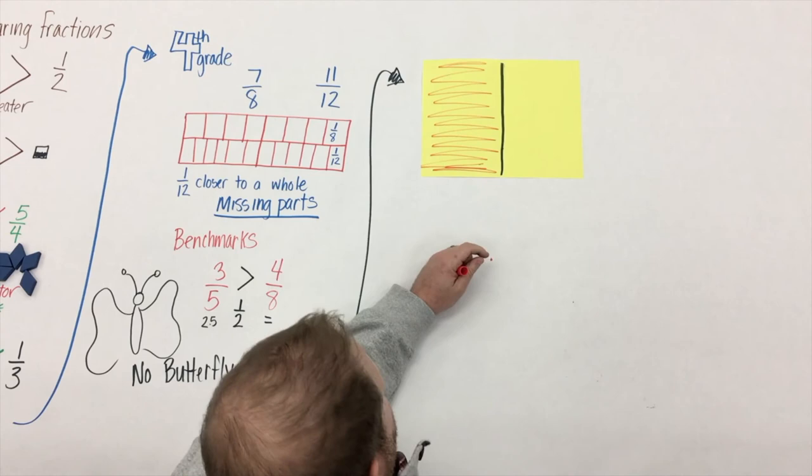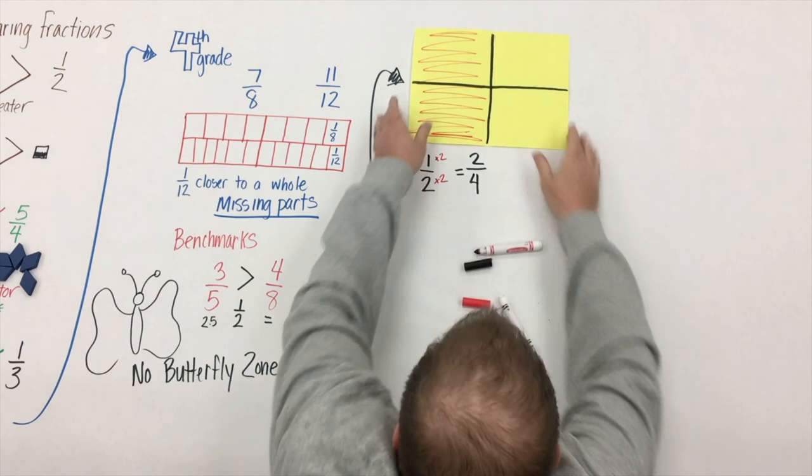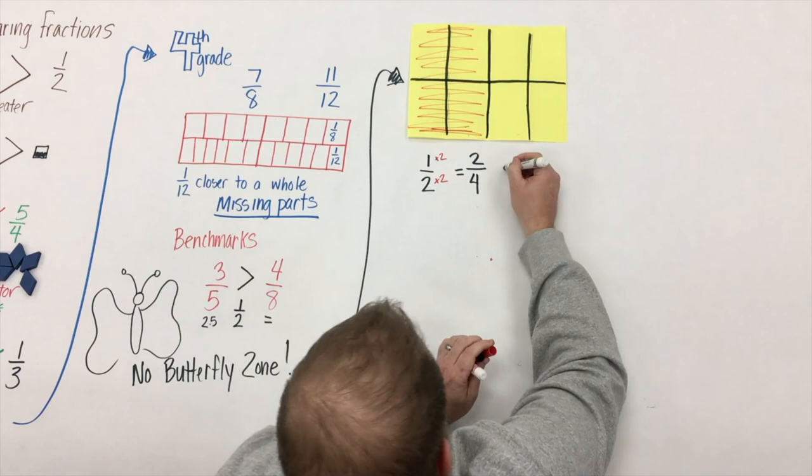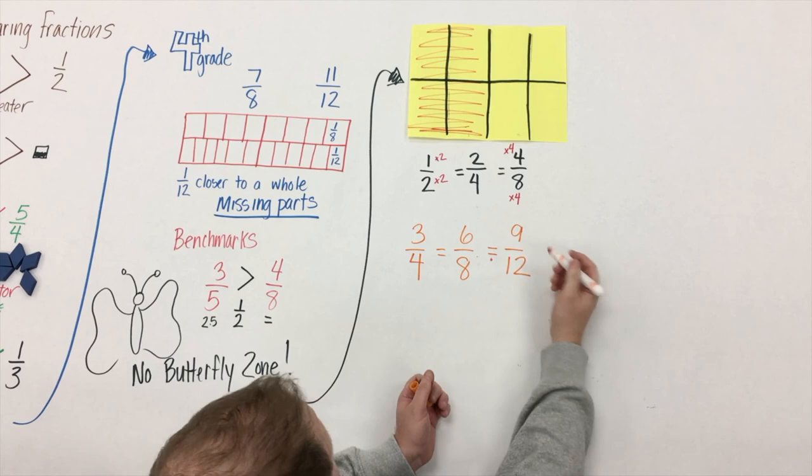We have four strategies for comparing fractions, but let's go back and revisit that idea of building equivalence. Here we have a half, and if we take our half and multiply it by two by dividing it, we can actually see that two-fourths is the same as a half. If we repeat that procedure, we see that we have four-eighths. This area model helps students visually see equivalent fractions.